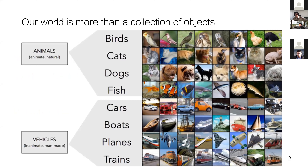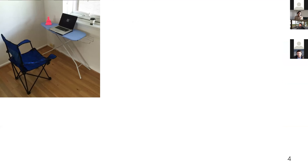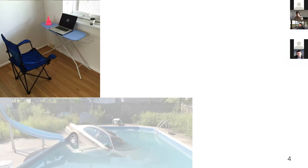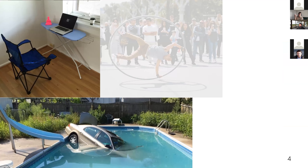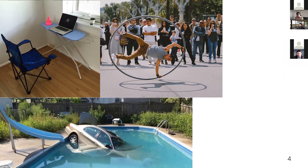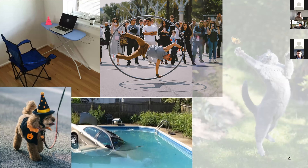Although computer vision has really gotten good at recognizing and identifying objects, our world is more than just a collection of objects. It's rich and vibrant, and people constantly surprise us with new performances. They repurpose items for new use cases, find themselves in predicaments they never thought we would, use equipment in ways we haven't imagined, and even animals surprise us with their fashion sense or unexpected agency.